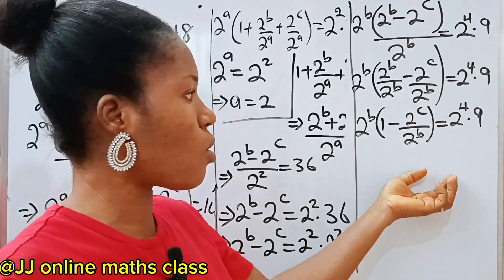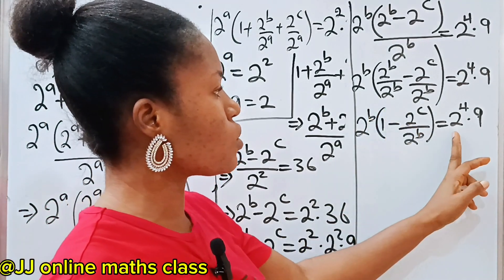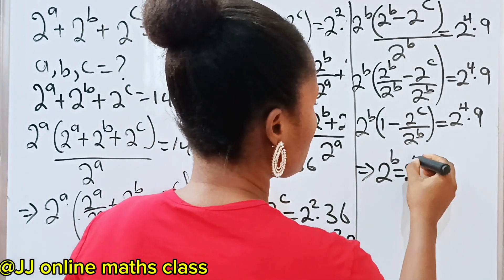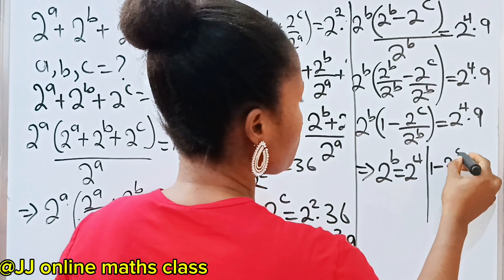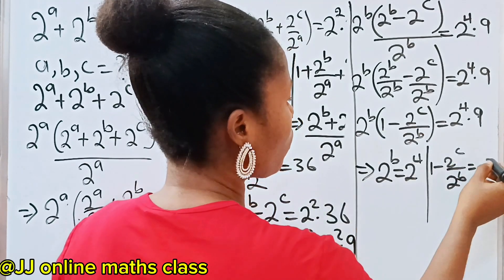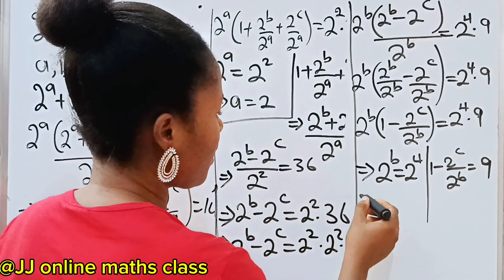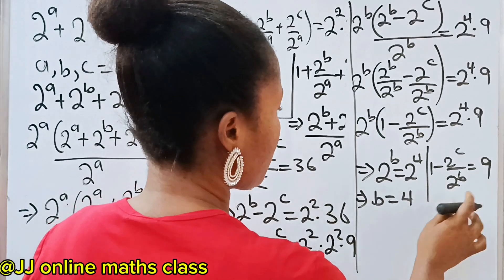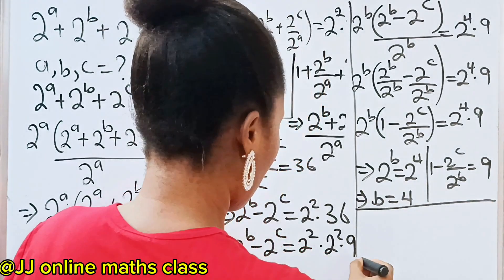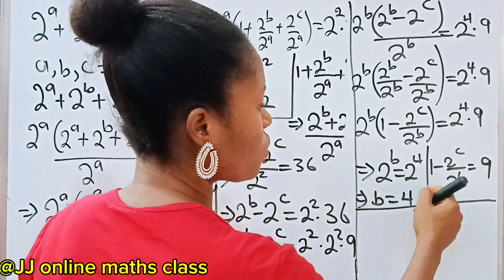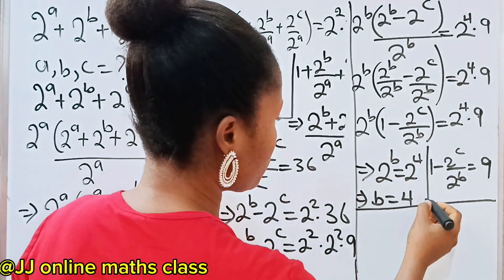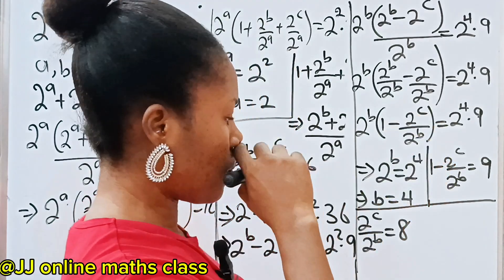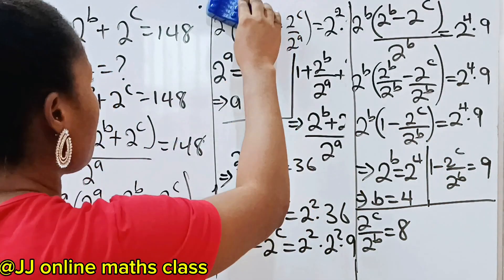By comparison, we can see that 2 to the power of B is equal to 2 to the power of 4, so B equals 4. And 1 minus 2 to the power of C over 2 to the power of B is equal to 9. Transferring the 1 to the other side, it becomes minus 1, so we have that 2 to the power of C over 2 to the power of B equals 8.